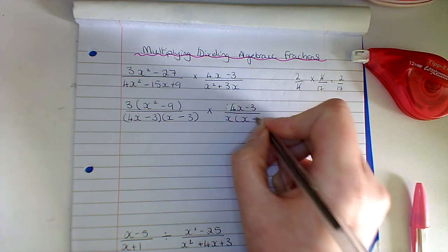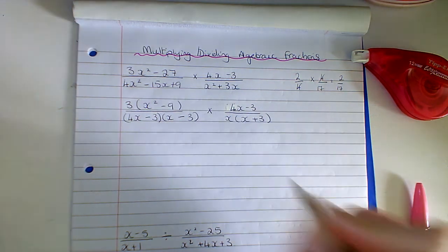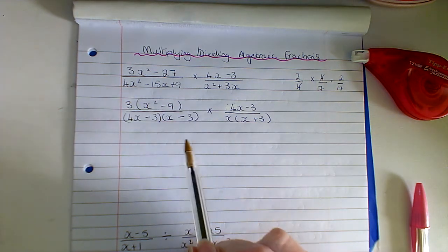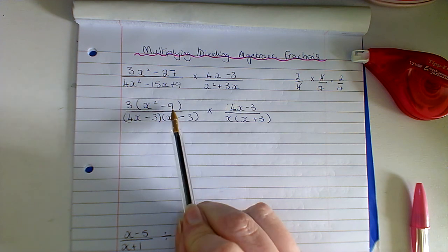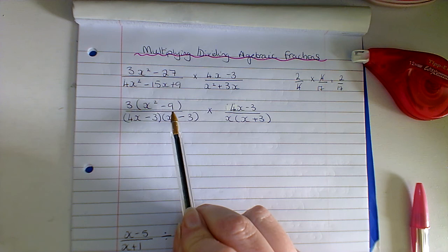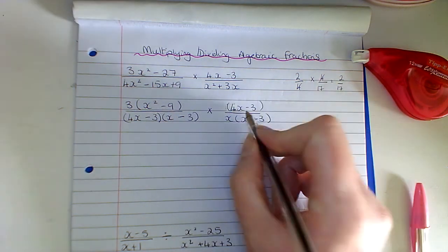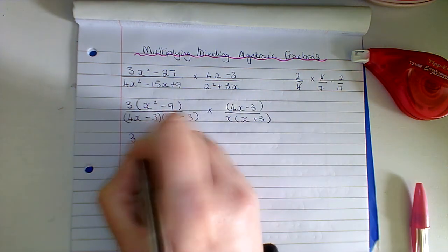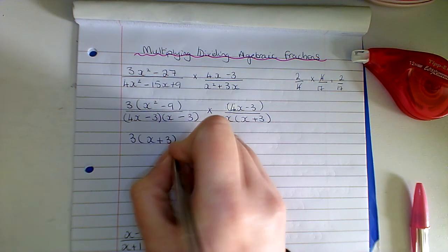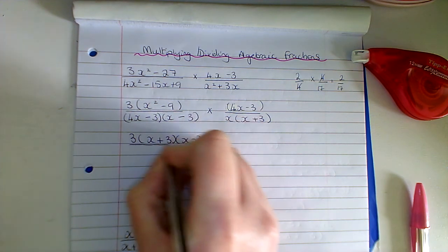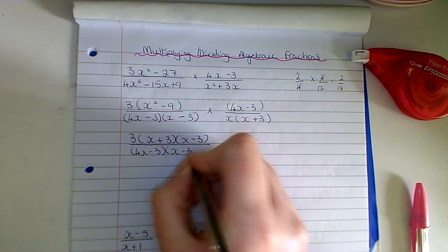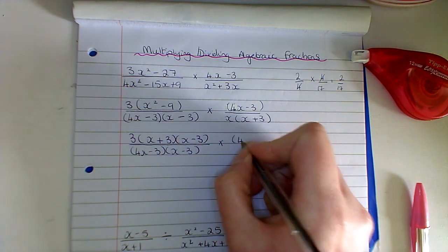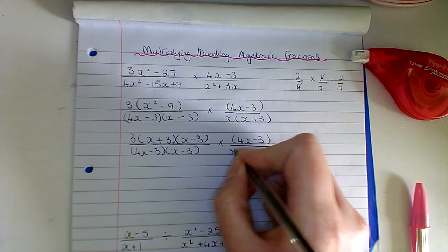And then the bottom here I am going to factorize. I'm going to have x times (x + 3). So I'm going to have a look and see is there anything that I have in common. There isn't really, but I haven't factorized this fully - I didn't want to do that in two steps. You might recognize this as the difference of two squares, and I have one thing in common, so I'm going to factorize this further and I'm going to have (x + 3)(x - 3) over (4x - 3)(x - 3) multiplied by (4x - 3), and then we have x times (x + 3).